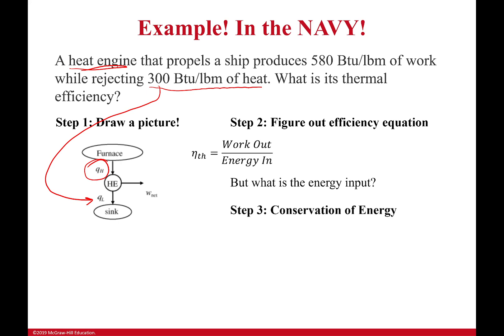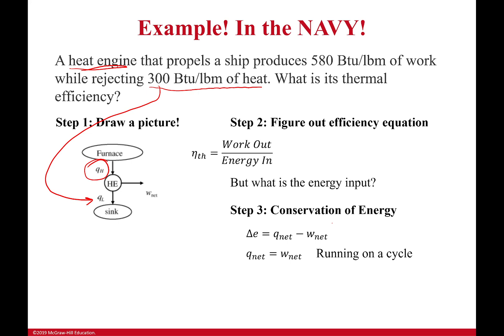Conservation of energy. The amount of energy entering the system and the amount of energy exiting the system has to be the same — it can change forms, but the totals have to be the same. This is my general law: change in energy is equal to Q_net minus W_net. It's a cycle, so this term is zero. I know what my net work is and I know what my heat output is, so I can rearrange and get my heat input. My net heat is equal to my heat input minus my heat output, so I rearrange to solve for heat input.